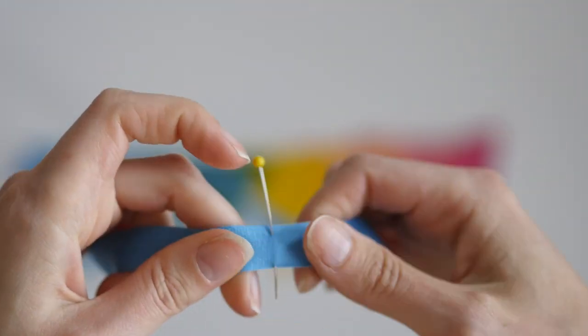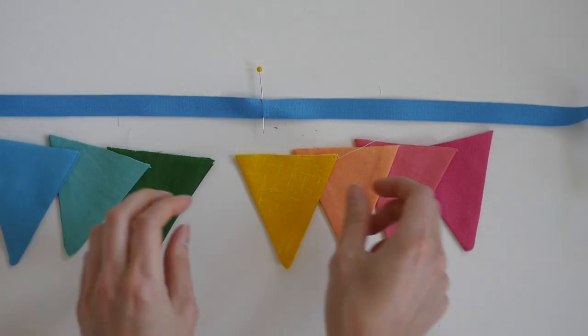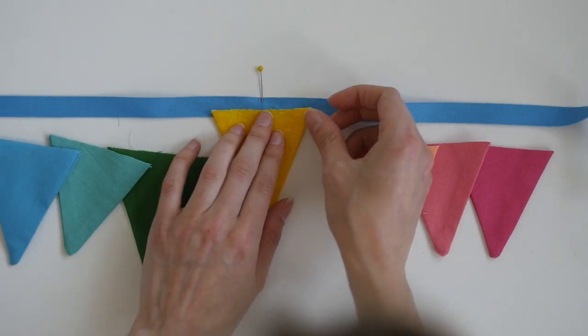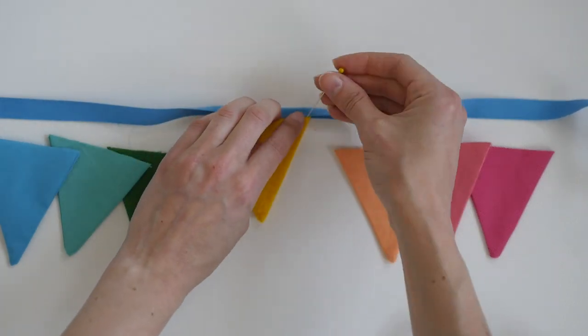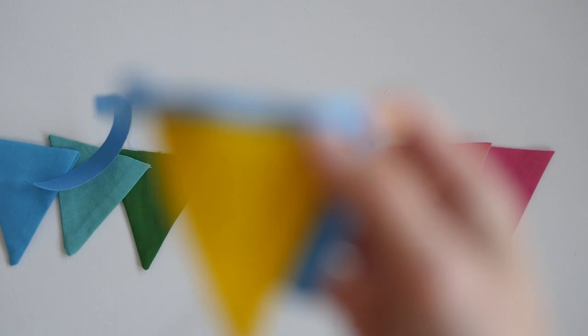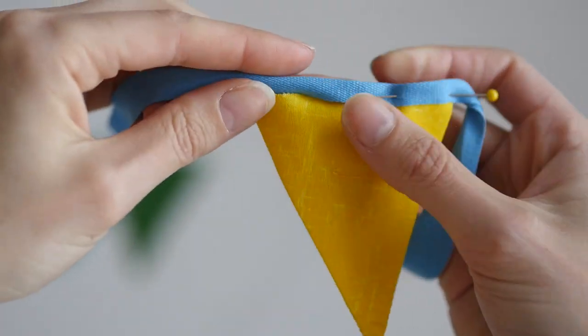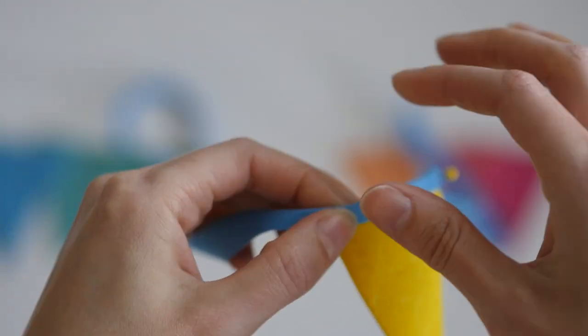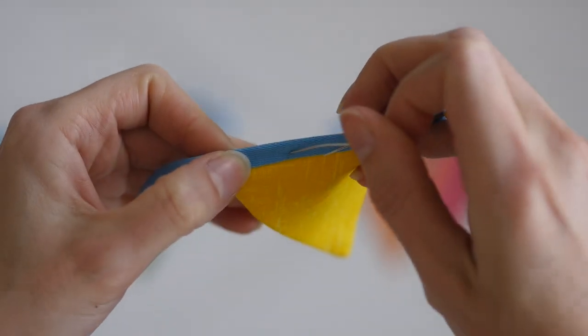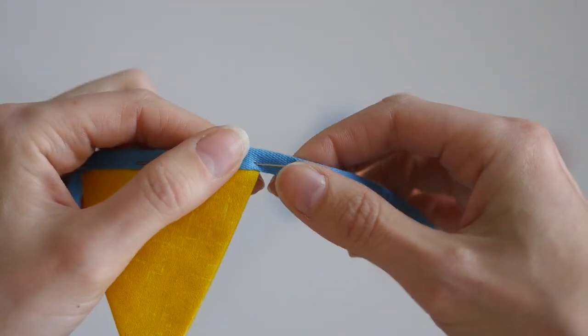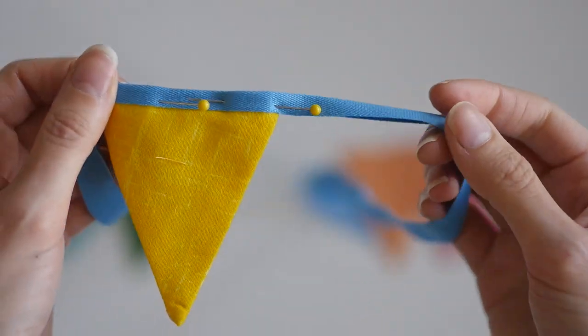On mine I have seven flags in total so this one in the middle is going to be the middle flag. I'm going to place that over my middle section that I marked with a pin and I'm just going to fold the cotton tape over and then pin down the bunting flag encasing those raw edges. The more pins you put in the better because it just holds it nice and still. Then you're just going to continue adding flags this way and then adding flags this way until you've got them all pinned in place along your ribbon.